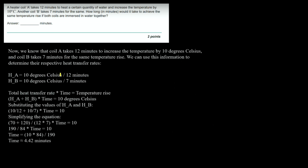The heat energy rate of A = 10/12 and of B = 10/7. Using the formula: (total heat transfer rate) × time = temperature rise. So (10/12 + 10/7) × t = 10. Simplifying: (70 + 120) / (12 × 7) × t = 10 → 190/84 × t = 10. The 10 cancels from both sides, giving t = 84/19 ≈ 4.42 minutes. That is the answer.